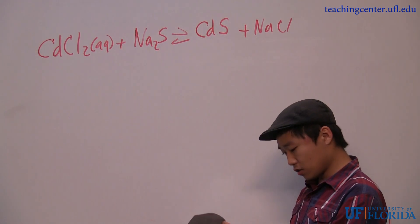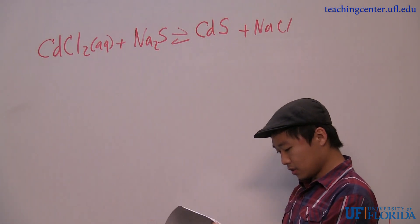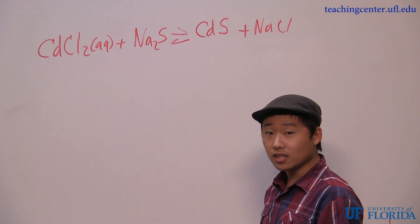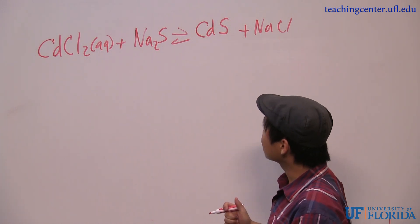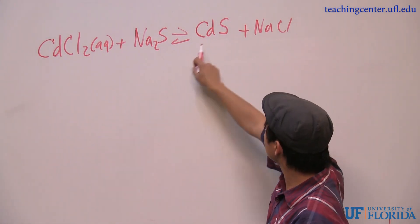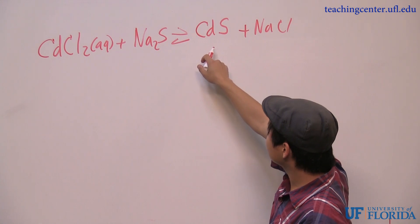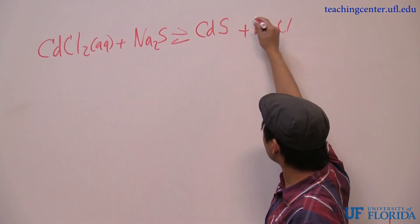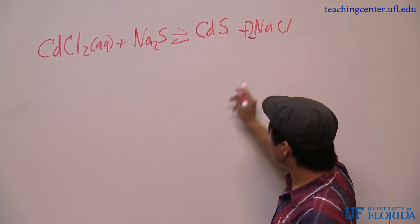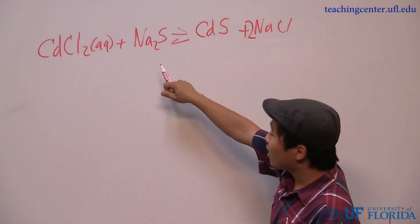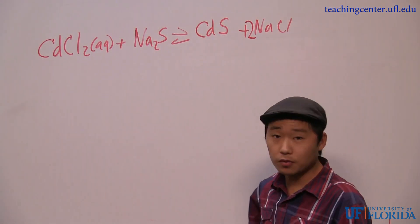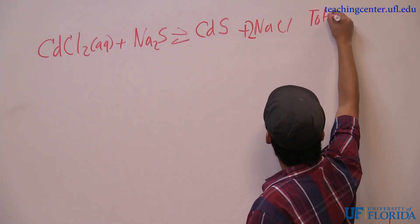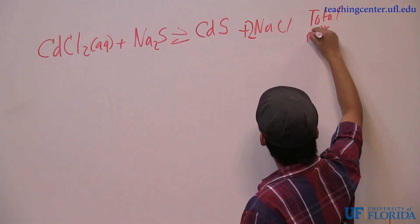The first thing you have to do is balance this equation. So let's see if we're balanced. I have one cadmium on each side, two chlorides on the left and only one on the right, so I need to put a two in front of NaCl. Now I have two sodiums on both sides, and we're good. This is what's called the total or molecular equation.